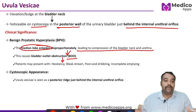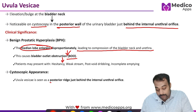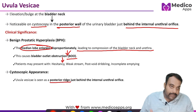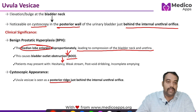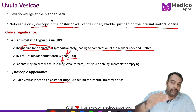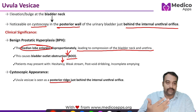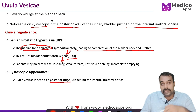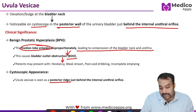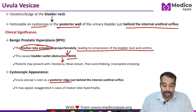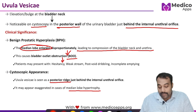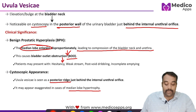Regarding the cystoscopic appearance, you are able to appreciate a posterior ridge just behind the internal urethral orifice, in the posterior wall. That ridge is basically your uvula vesicae, and that elevation is due to the median lobe of the prostate. Sometimes due to exaggerated median lobe hypertrophy, it may appear in an exaggerated manner as well.